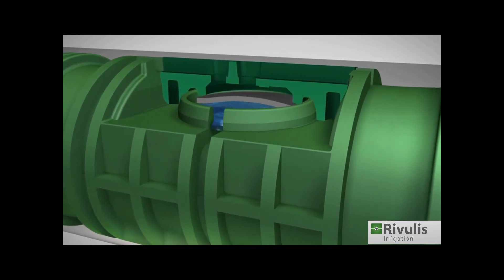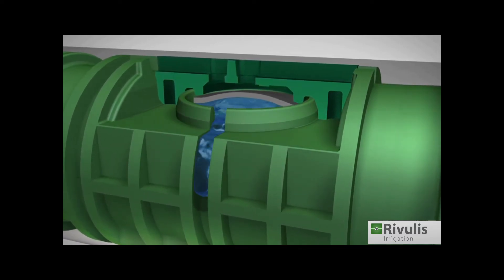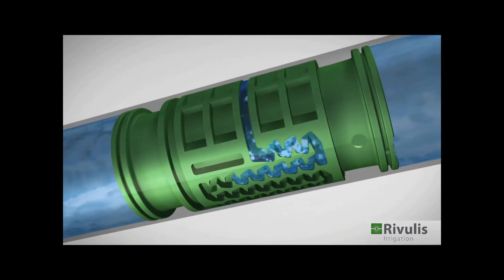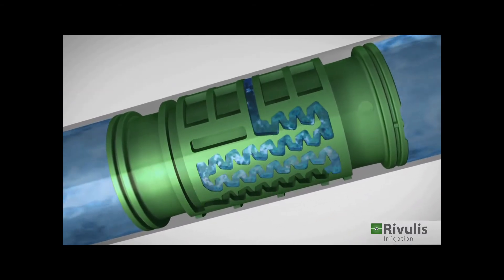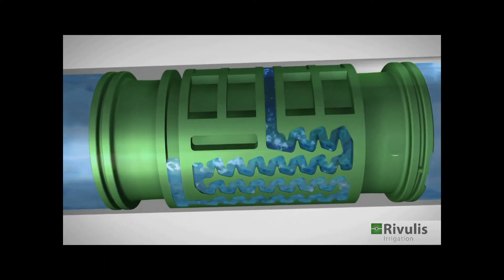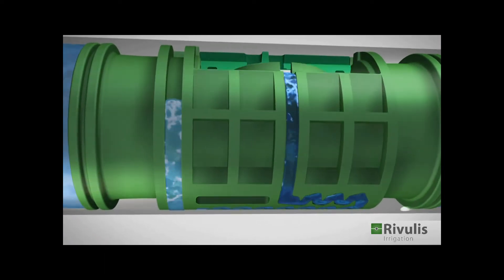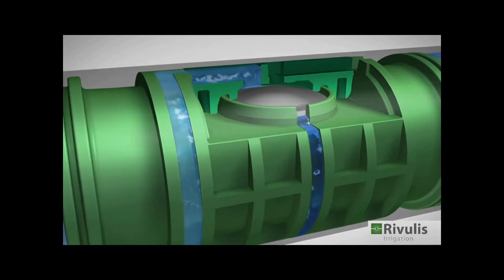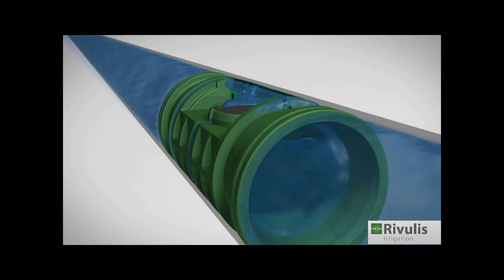The water from the pipe enters the dripper through the inlet filter and exerts pressure on the bottom of the diaphragm. The large cross-sectional labyrinth provides excellent protection against clogging.